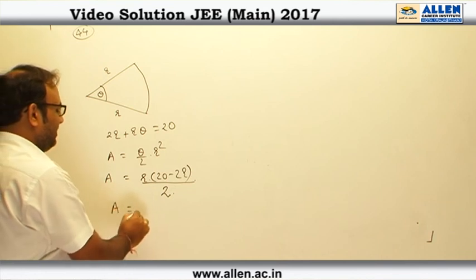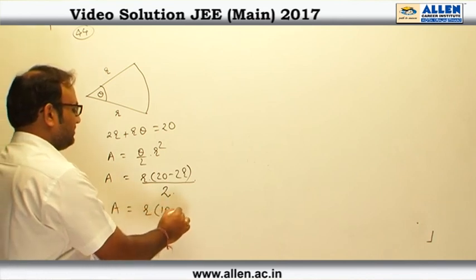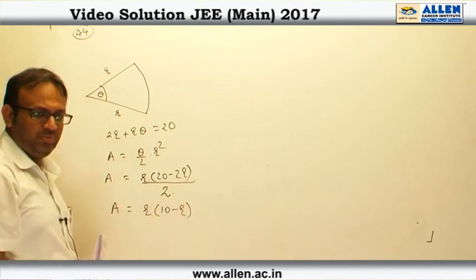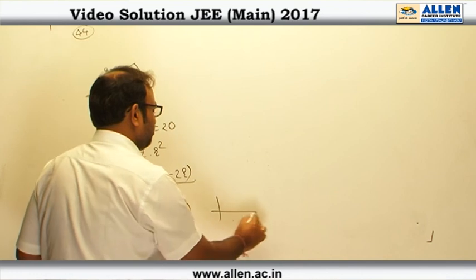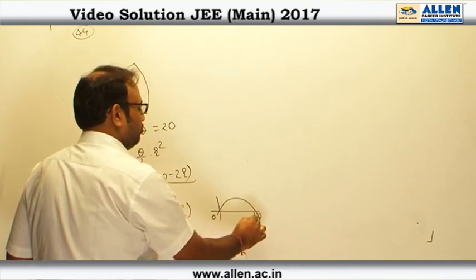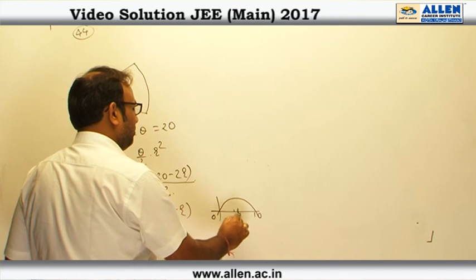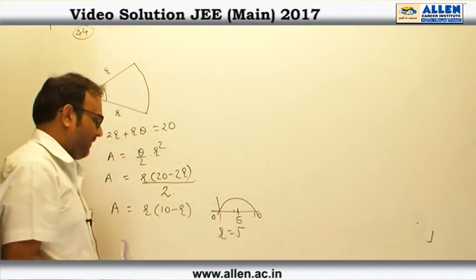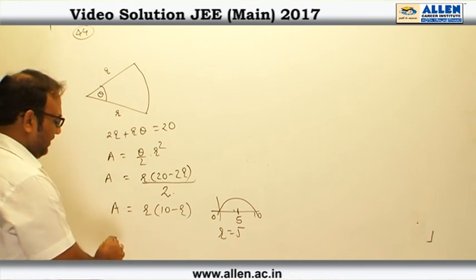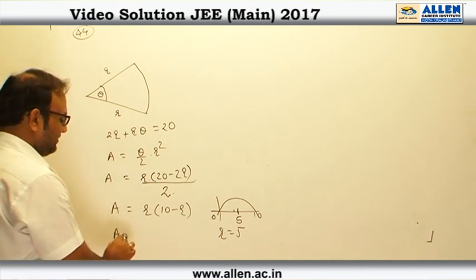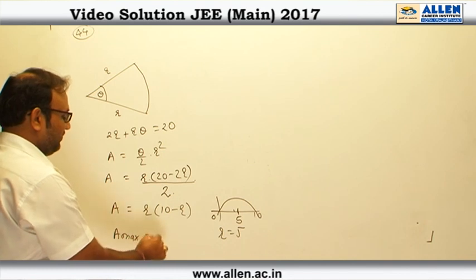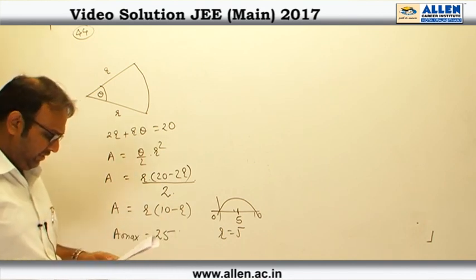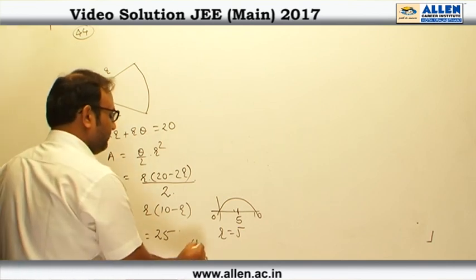We can substitute r·theta = 20 - 2r into the area formula, giving Area = r(10 - r). This is a downward-opening parabola with roots at 0 and 10, so the maximum occurs at r = 5, giving maximum area = 25. Option number 4 is the correct answer.